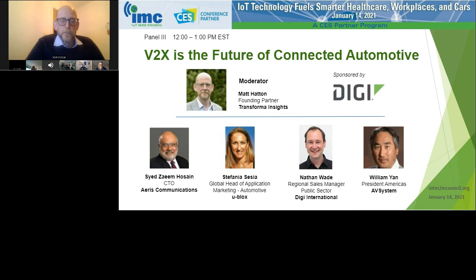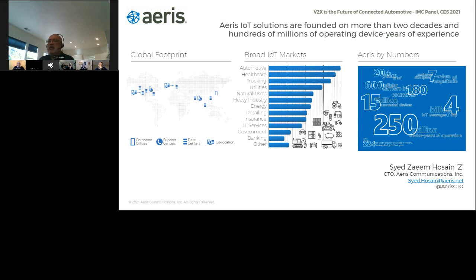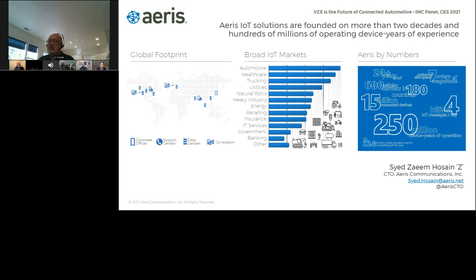Thank you, Matt. We've been providing IoT solutions for more than two decades. I'm one of the founders of the company, and we've been around for 25-plus years. We have a global footprint, offering IoT services soup to nuts — from connectivity all the way through analytics. We support services in over 180 countries, with units registering in about 160 countries. Automotive is our biggest market; we have over 15 million units deployed, with well over 60-65% in automotive and fleet, because cellular IoT is a natural fit for that market.